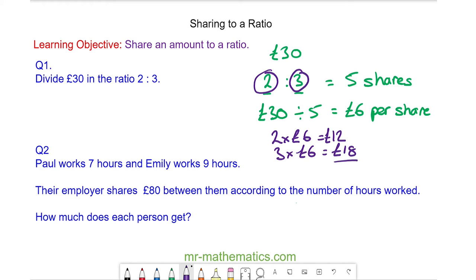We can check that this is right because the £12 added to the £18 should make the total amount of £30, which it does.